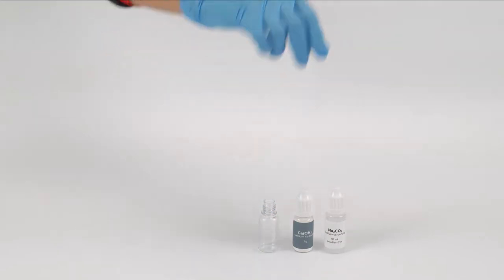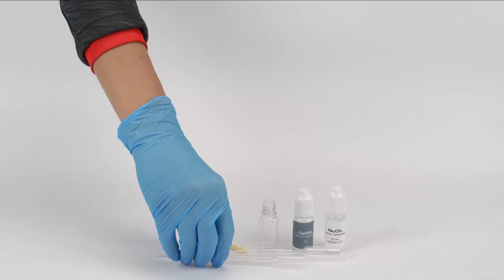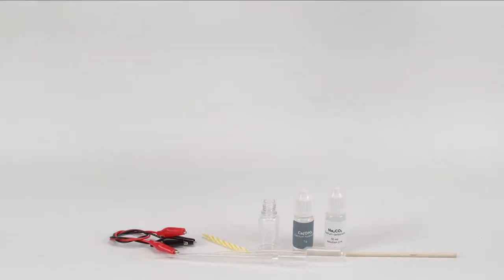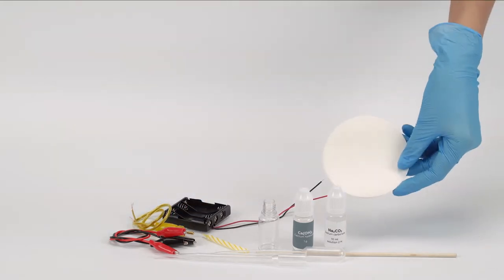Take an empty reagent bottle, a candle, a pipette, a filter body, a wooden stick, two wires with crocodile clips, a cable plug, the battery holder, and a filter paper from the experiment set.